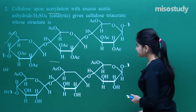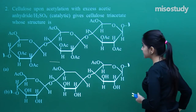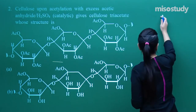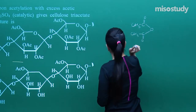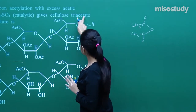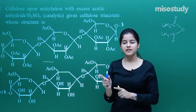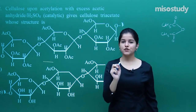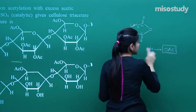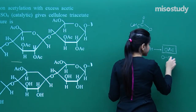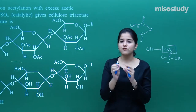Now let us move on to the next question. Cellulose upon acetylation with excess acetic anhydride gives cellulose triacetate. First I need to know the structure of cellulose, then acetylate it. In acetylation, OH is always replaced by OAc, that is OCOCH₃. So we need OAc in the replacement of each and every OH.